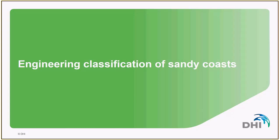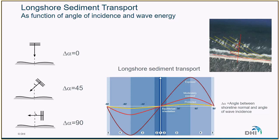Another way of classifying sandy coasts is based on their coastal response to interferences — and wave direction is a very important parameter here. As seen in the previous webinar, longshore sediment transport depends on the angle of incidence of wave energy. When waves arrive normal to the shoreline, the angle is close to zero and longshore sediment transport is also close to zero. As the angle of incidence increases, sediment transport increases until about 45 degrees, then the waves become more parallel to the coast and generate less longshore sediment transport. This is the starting point of Q-alpha curves.